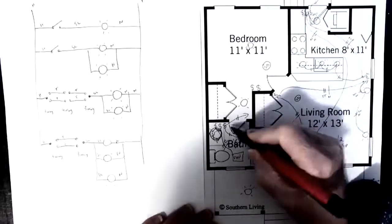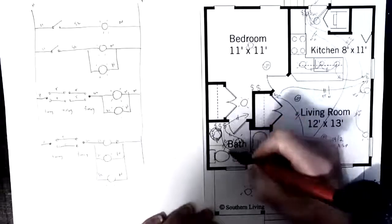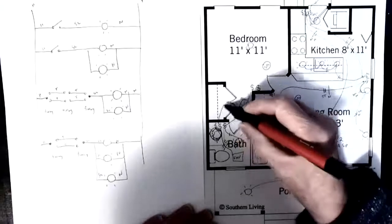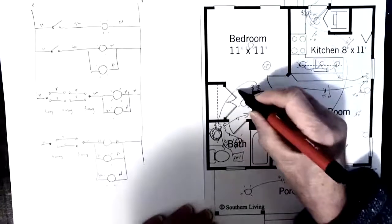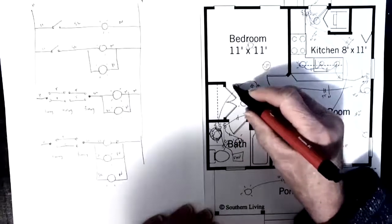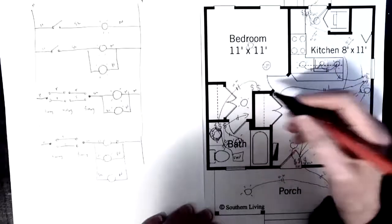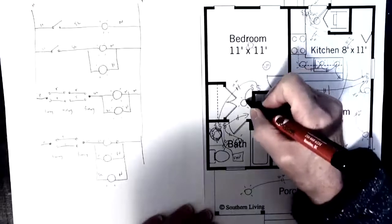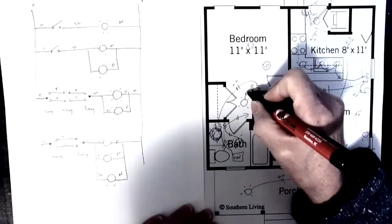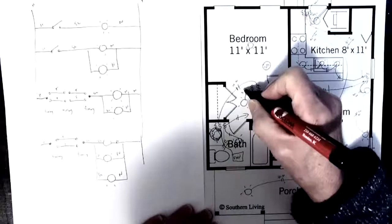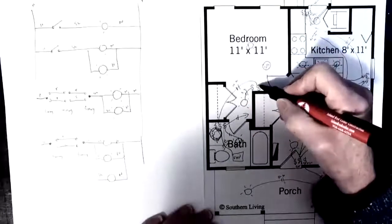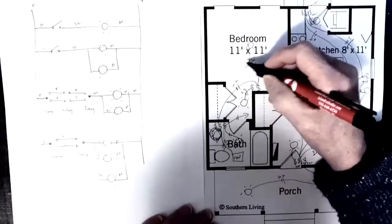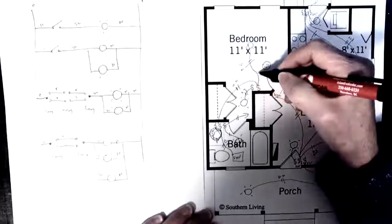And then, so I took power into the set of switches, and I wired everything up in the bathroom. And now I've got to take power to this next set of switches, just taking a hot and neutral to that next set of switches. And what we want to wire up is the hallway light. So I'm going to take a switch leg and a neutral to the hallway light. And then I'm also going to take a switch leg and a neutral to the bedroom light.